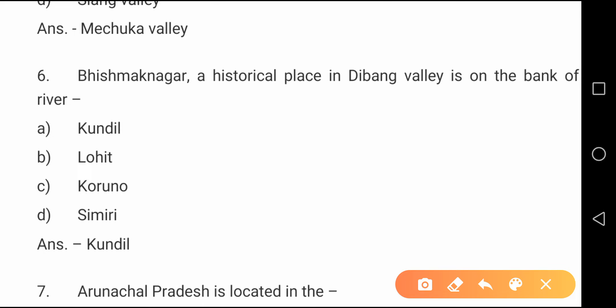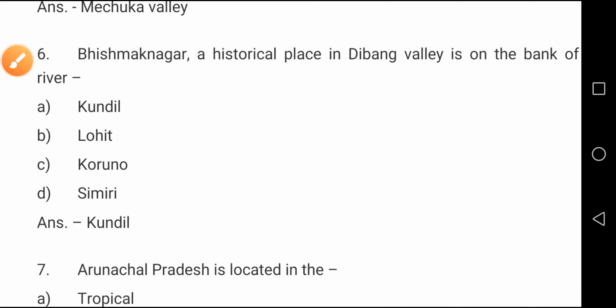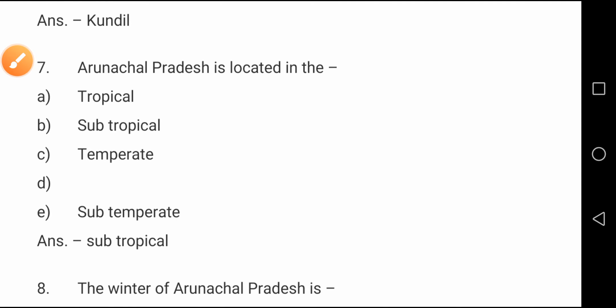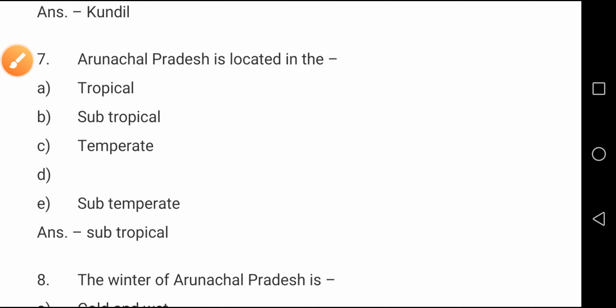Question number six: Bishmak Nagar, a historical place in Tipang Valley, is on the bank of which river? The correct answer is option A, the Kundil river.